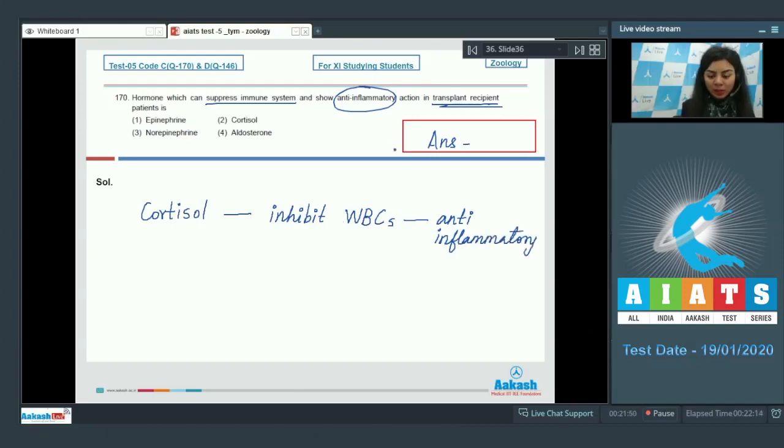This is necessary to avoid graft or transplant rejection, as they suppress our immune system against a foreign agent or object. So the right answer here is option number two, cortisol, whereas epinephrine and norepinephrine are catecholamines, whereas aldosterone is required to maintain the electrolyte balance in our body. The correct answer is option number two, cortisol.